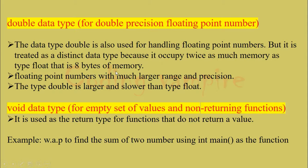Floating point numbers with much larger range and precision. So double has much larger range and can have many digits after the decimal point. The type double is larger than type float.